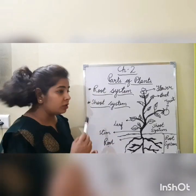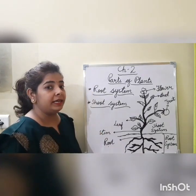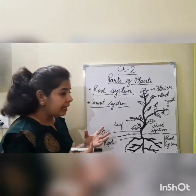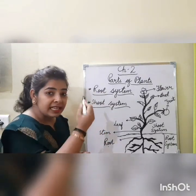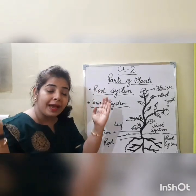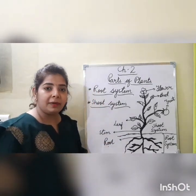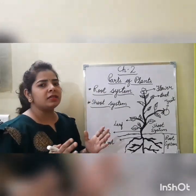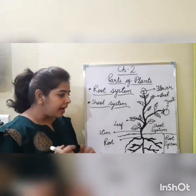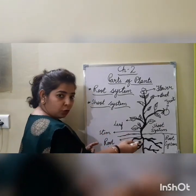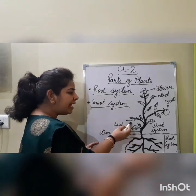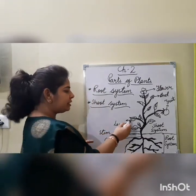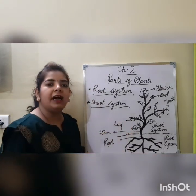The leaf needs sunlight, which it gets from the sun, and carbon dioxide, which is present in our atmosphere along with oxygen. So the leaf uses water and minerals absorbed by the root, plus sunlight, plus carbon dioxide, to prepare food for the plant.